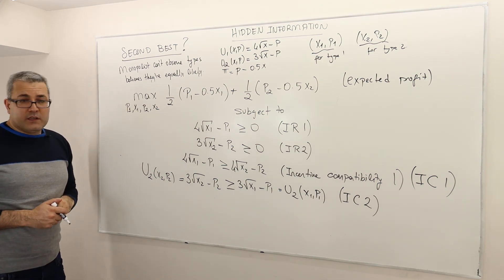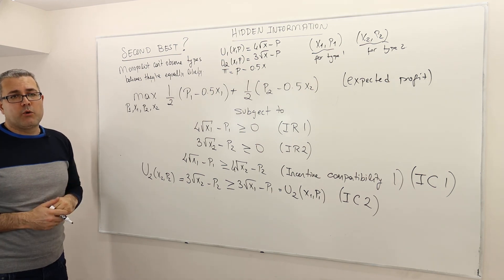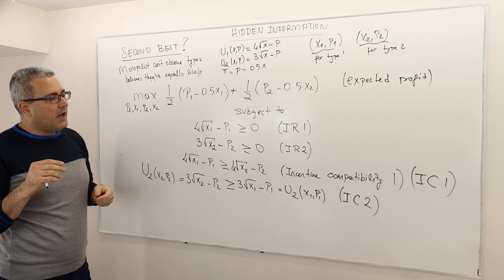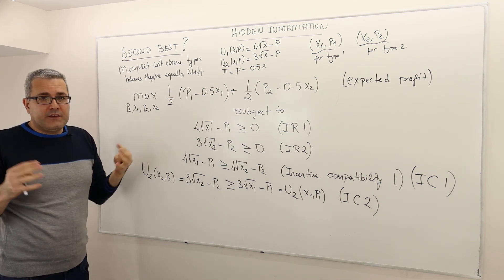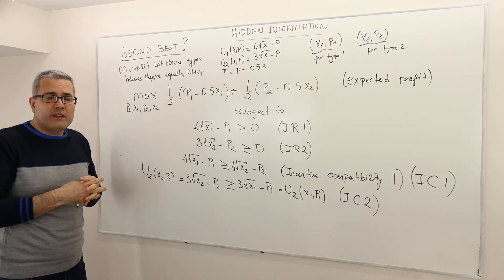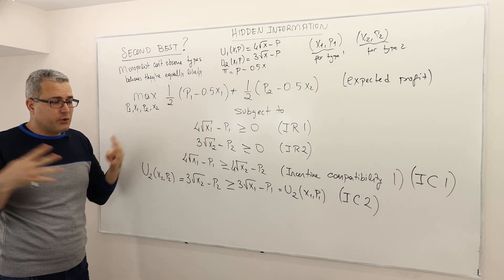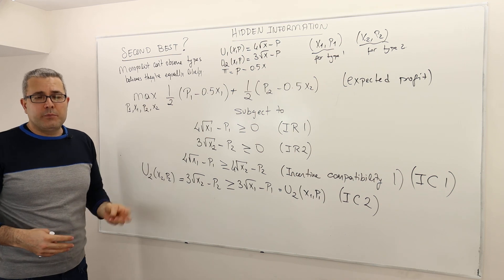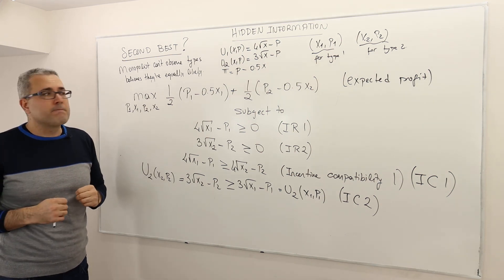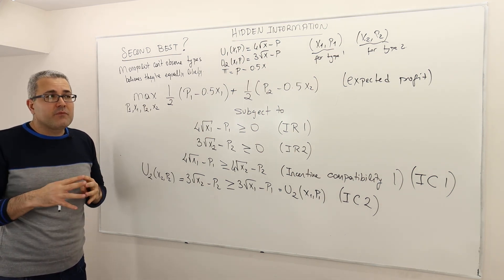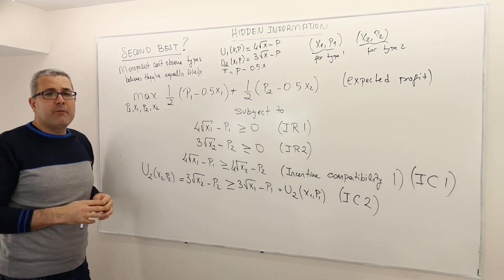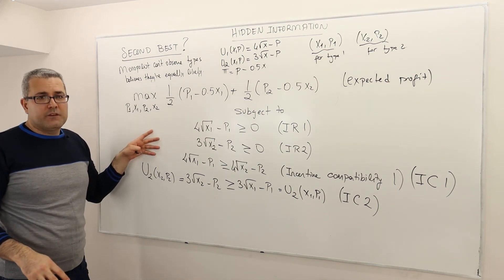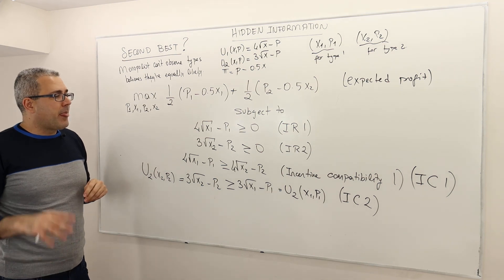How are we going to solve it? There are different ways. One way is to write down the Lagrangian or the Kuhn-Tucker conditions and determine the optimal P1, P2, X1, and X2 — but that's the hardest way. I'm going to show you a few tricks to solve this in the next episode.